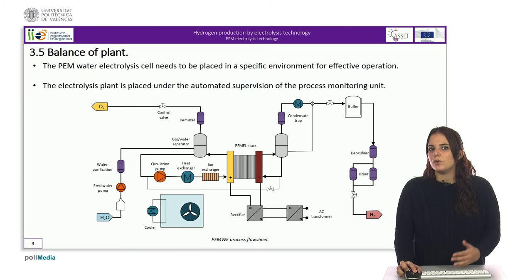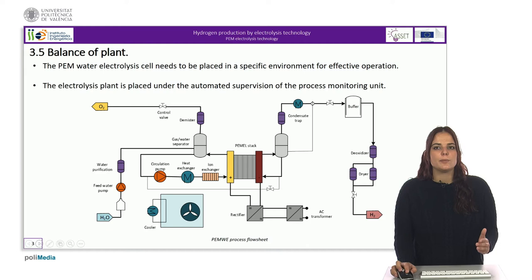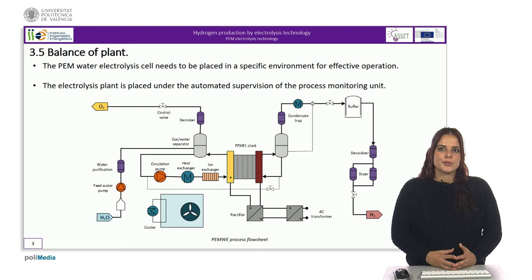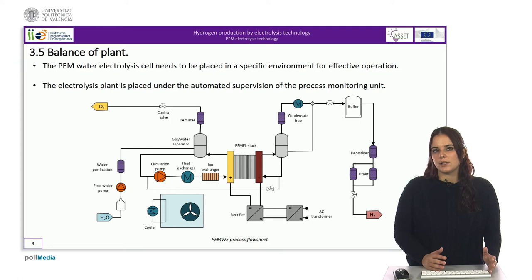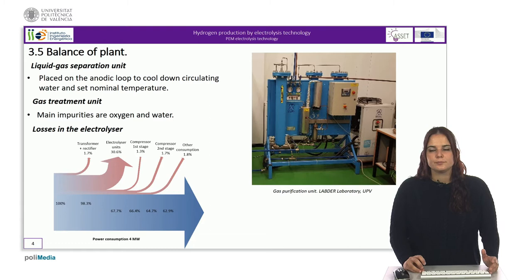Besides that, hydrogen is released after conditioning in an oxygen purifier and water dryer units that form part of the gas conditioning unit. The electrolysis plant is placed under the automated supervision of the process monitoring unit for continuous operation and monitoring. In a PIM water electrolysis plant, there is usually no thermostat to adjust the temperature of circulating water. The plant is designed to operate at nominal current density and the heat produced is extracted and dissipated to the surroundings via a blower. Heat dissipation is usually the rate-determining step that dictates the maximum operating current density of the electrolysis unit.